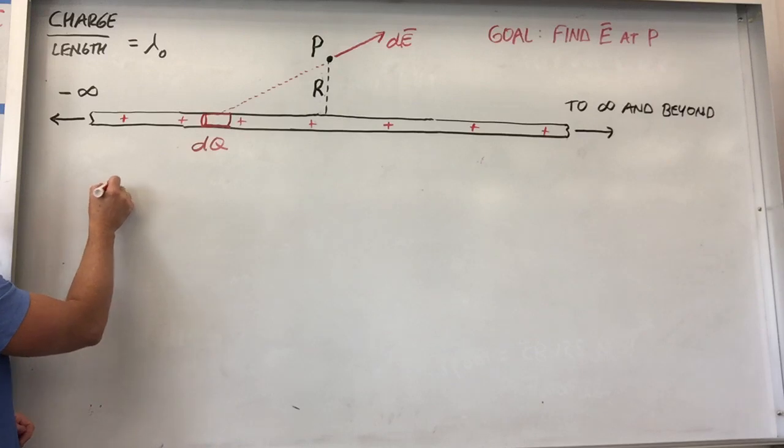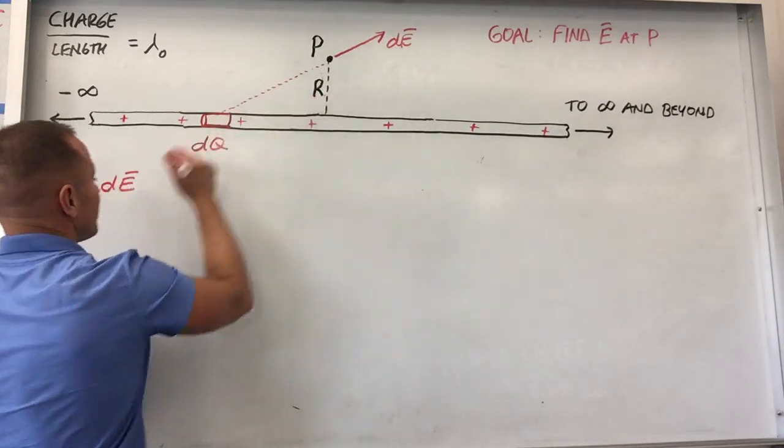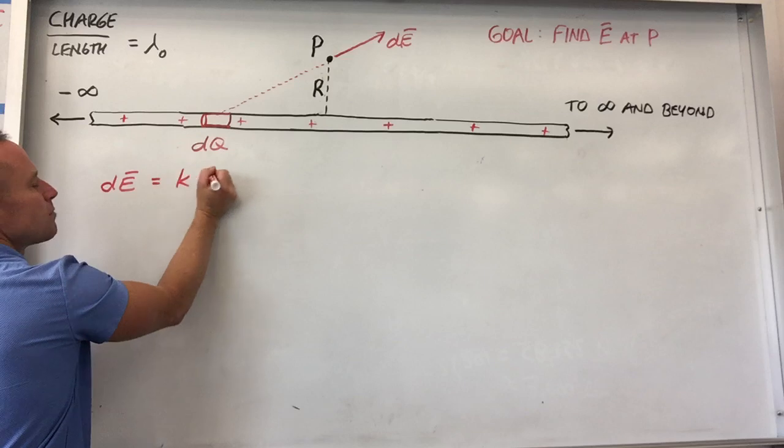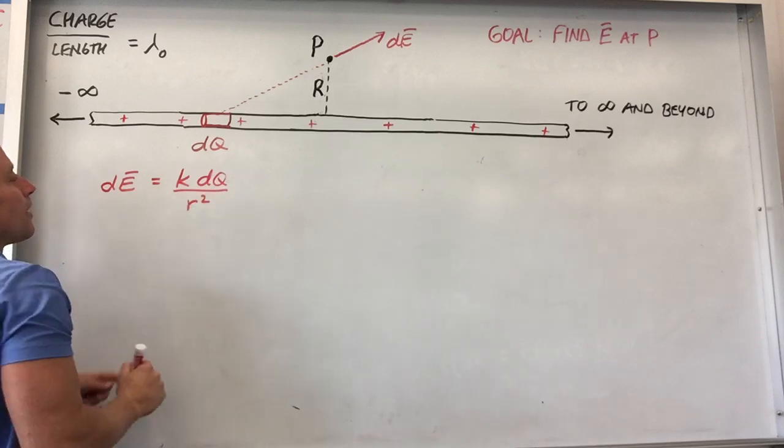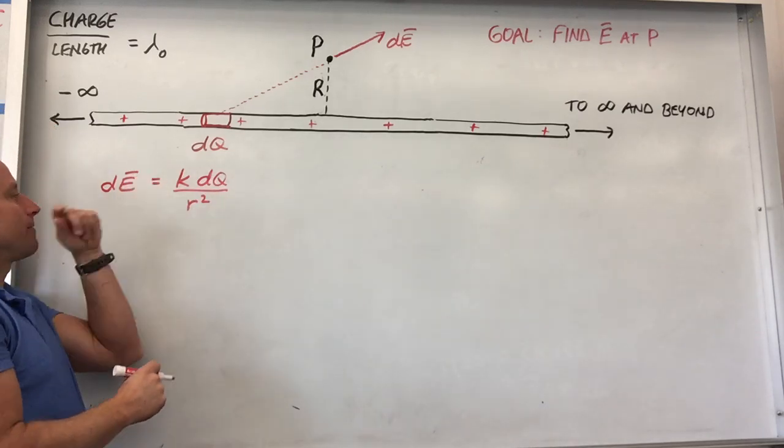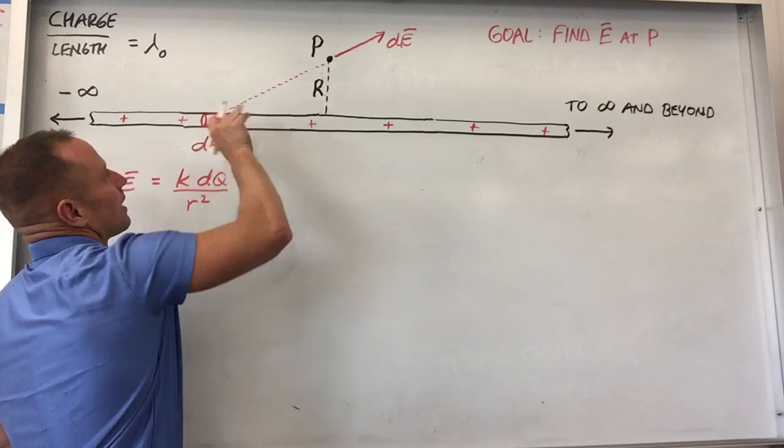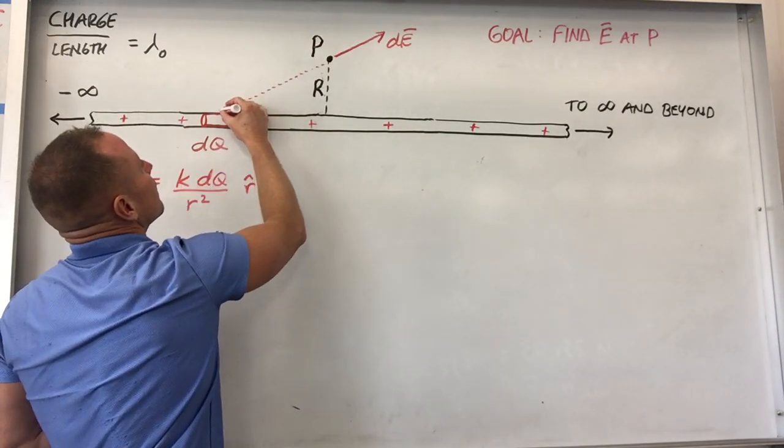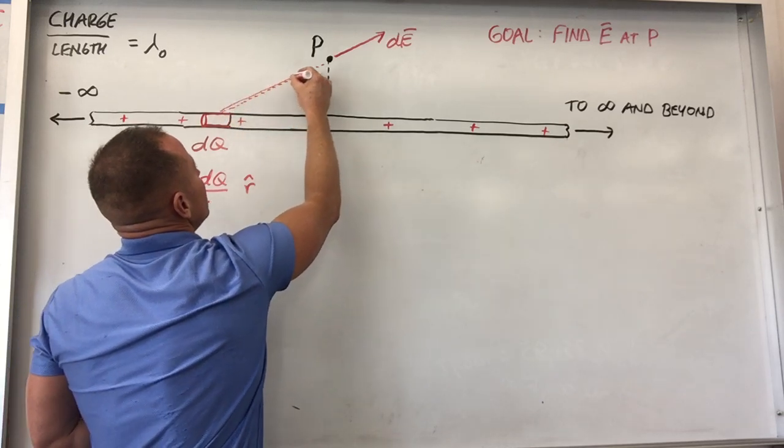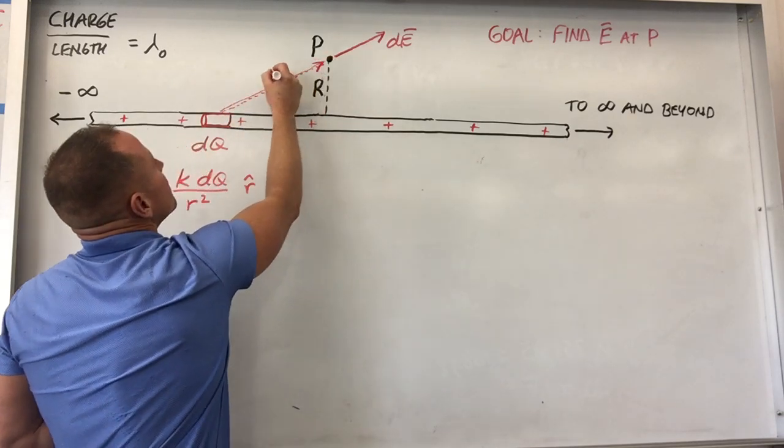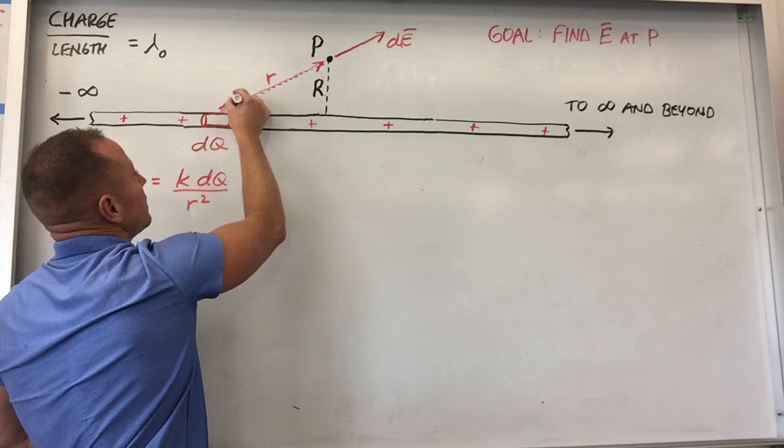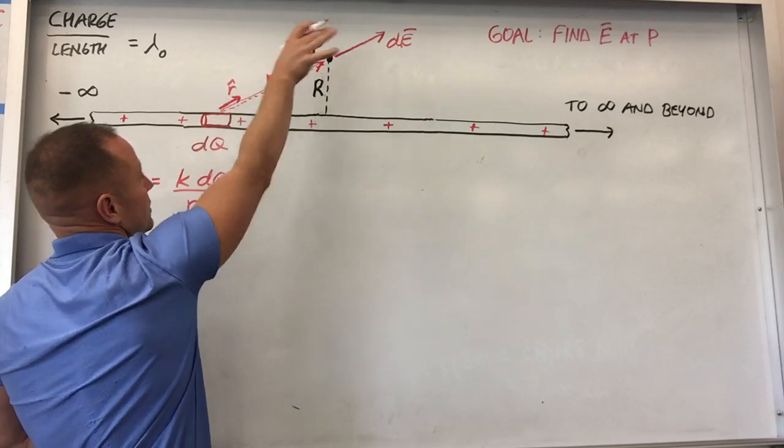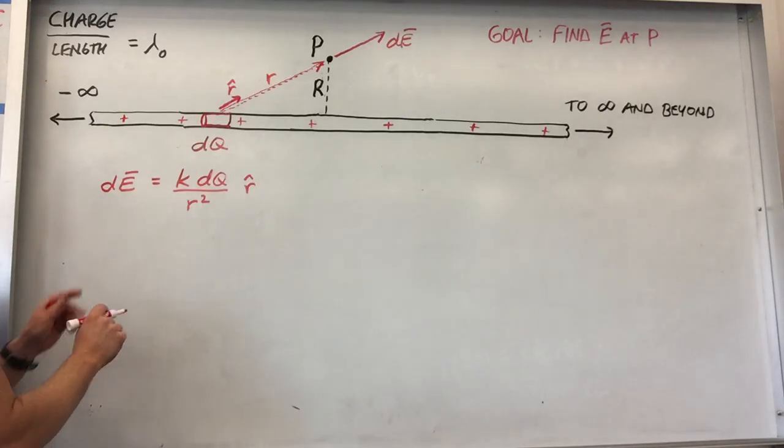Coulomb's law tells us that that little bit of field DE, the size and direction of it, go like this. The size is basically K times charge over R squared. K times the charge is DQ divided by R squared. Now, if we could stop here, life would be easy. But this thing is a vector. It points radially away as we've drawn it. Here's the R vector goes from the cause to the effect. It goes from the charge to the point in question. So this would be the R vector itself. And then R hat points radially along that direction. It's a unit vector that points this way.